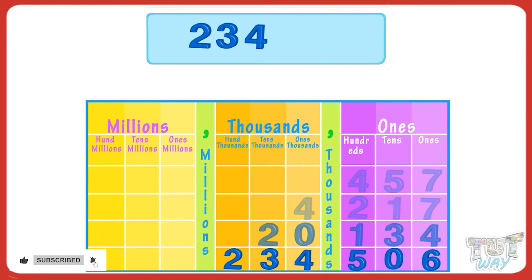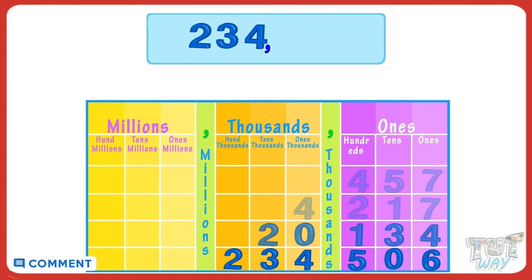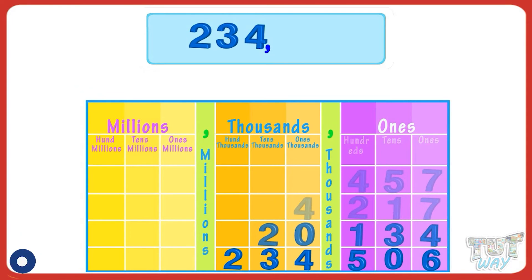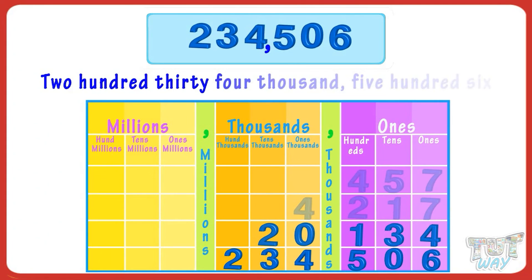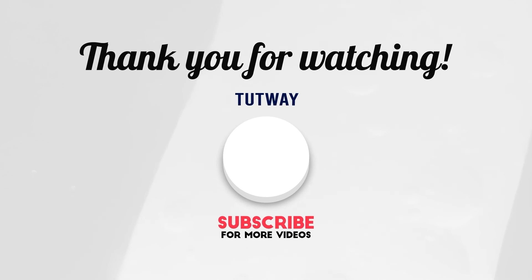Two, three, and four are in the thousands period, so read it as 'two hundred thirty-four thousands' and place a comma. The next three numbers are in the ones period — read them according to place values as 'five hundred six.' So we rewrite this number and read it as 234,506: two hundred thirty-four thousand, five hundred and six.